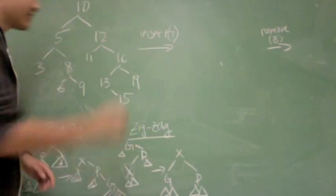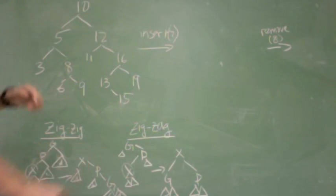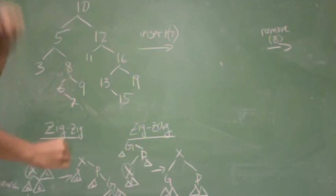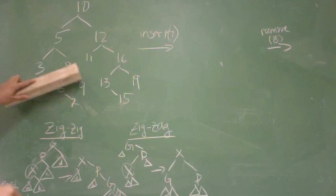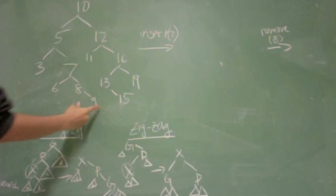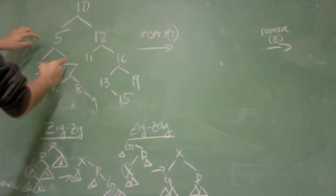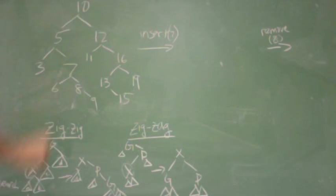Say we have this example here, and we wanted to insert a seven. So we'd follow the same steps, right? We'd add the seven here, and then you want to splay the seven up. So you see here that you have a zig-zag operation that you'll have to do. So what you do is, you split the six and the eight, so now you have the seven, six, eight, and nine. That's one of the children left over. You move the seven up, and then you have another zig-zag operation. And so here, again, you split.